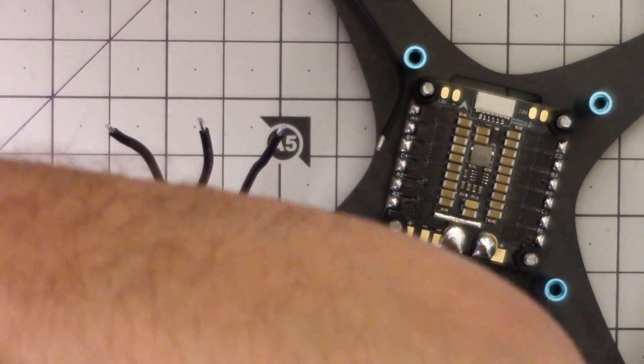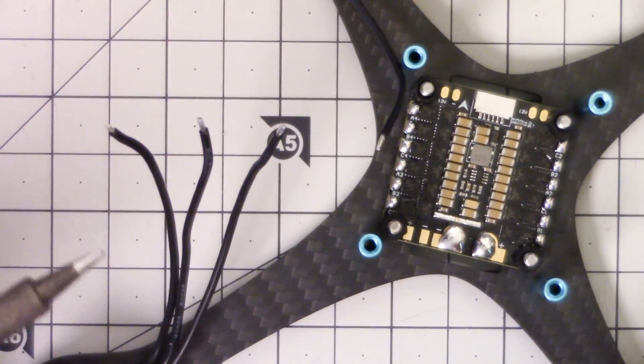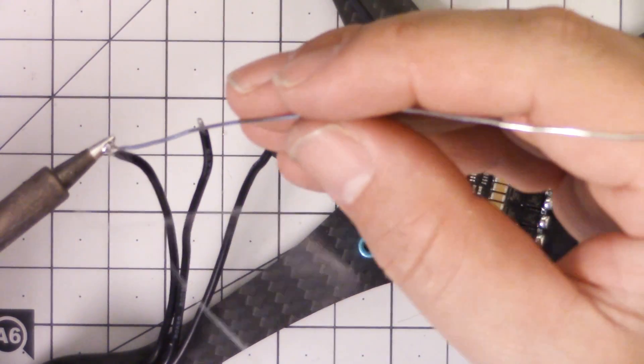I'm just going to tin them as is and wire them up, and if I've got a little bit of extra slack then I'll figure out where to stick it.